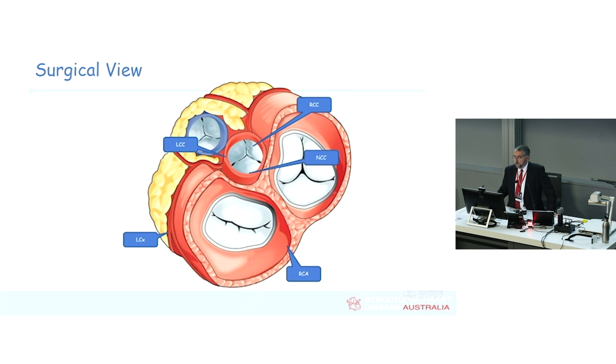So if you're doing 3D echo, CT, or MRI, use those landmarks. If you can see the atrial septum, you're at the non-coronary cusp. If you can see the left atrial appendage, then you're at the left coronary cusp.